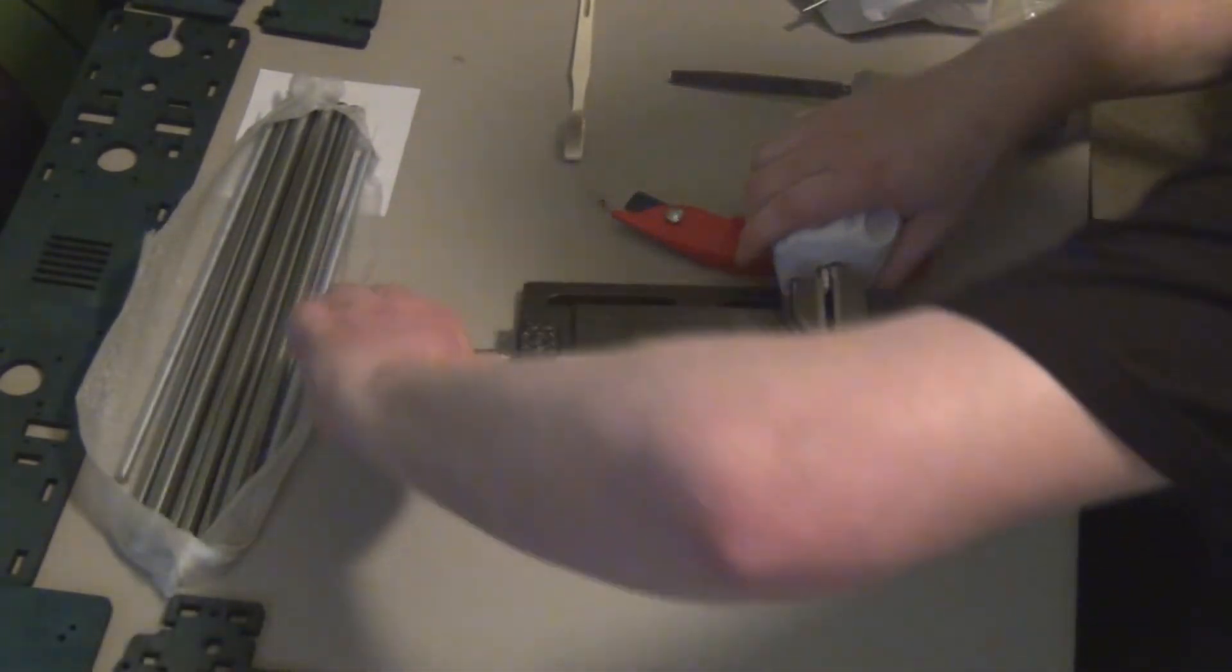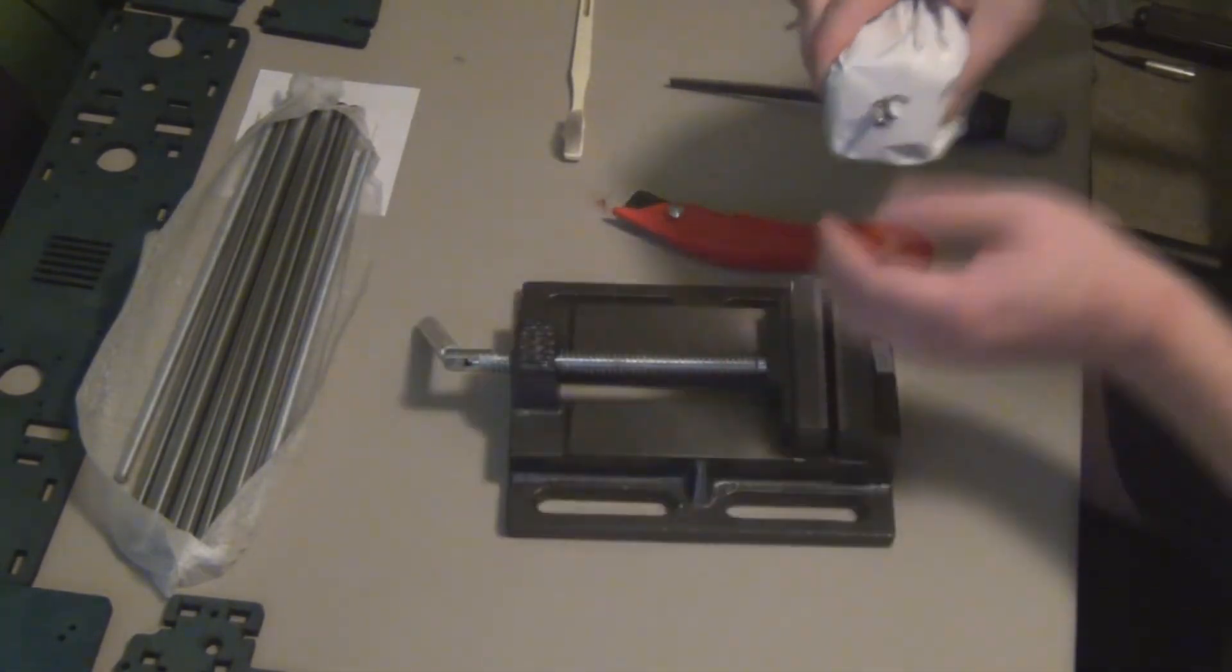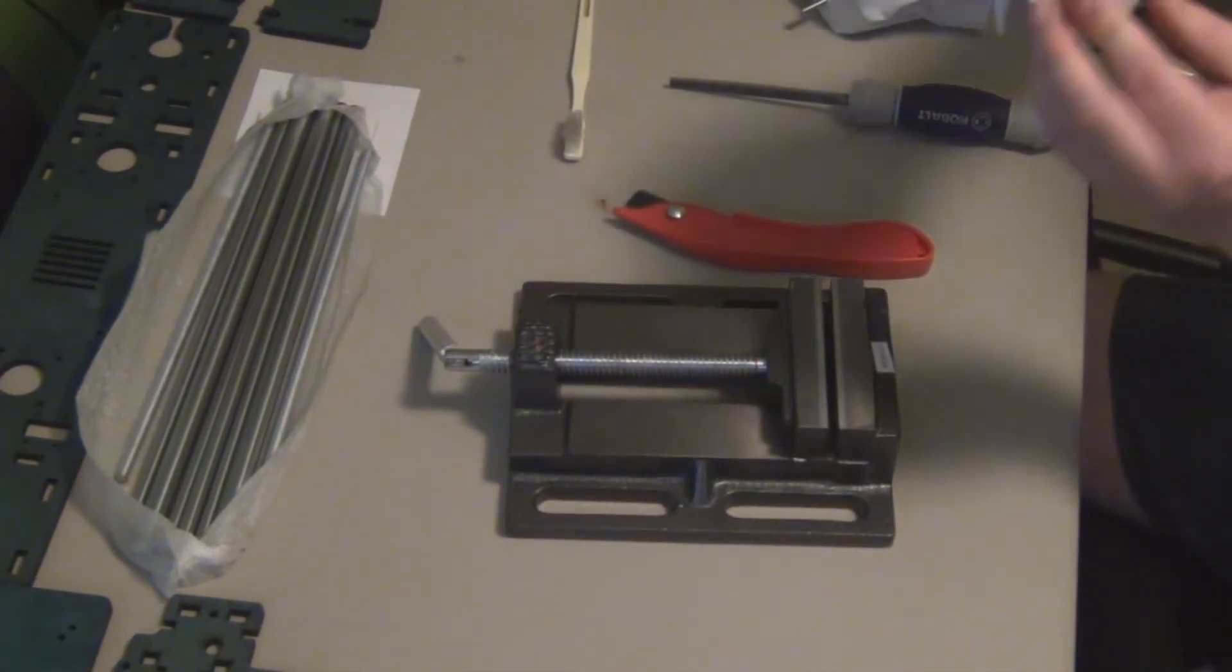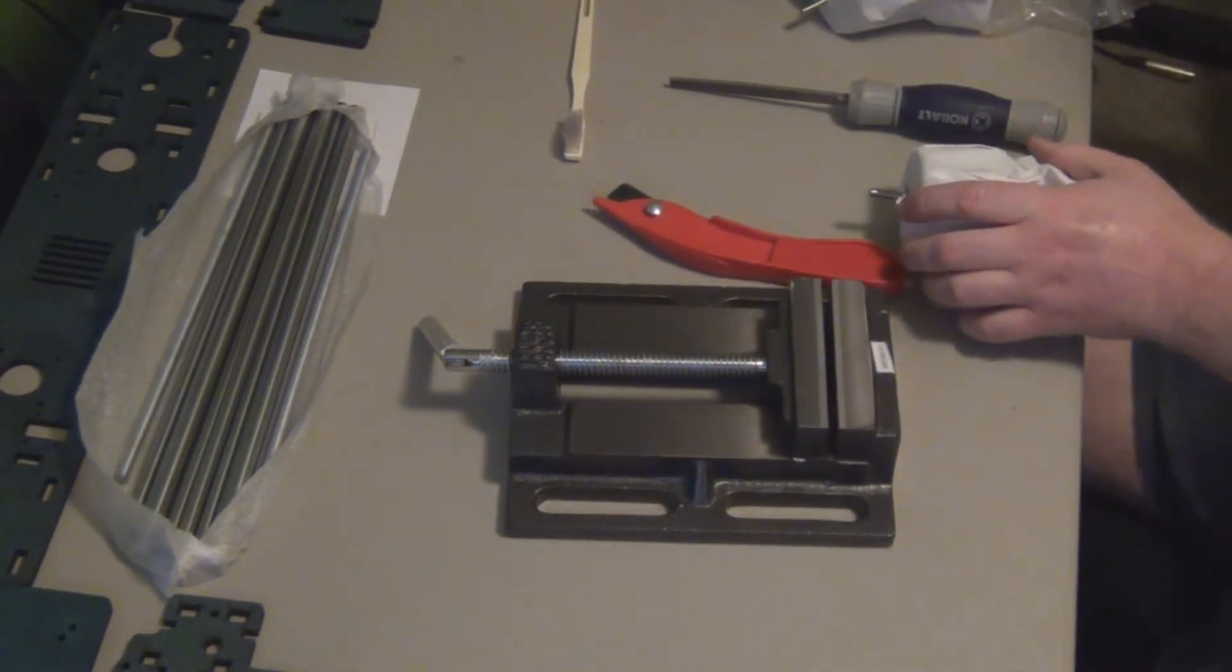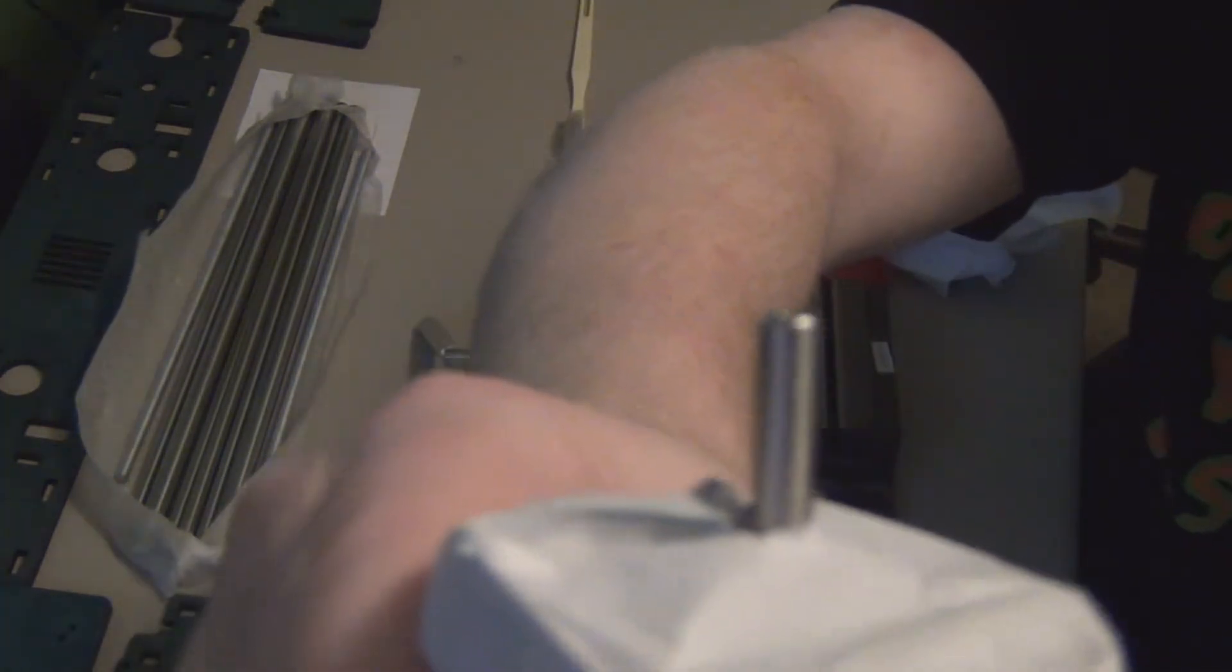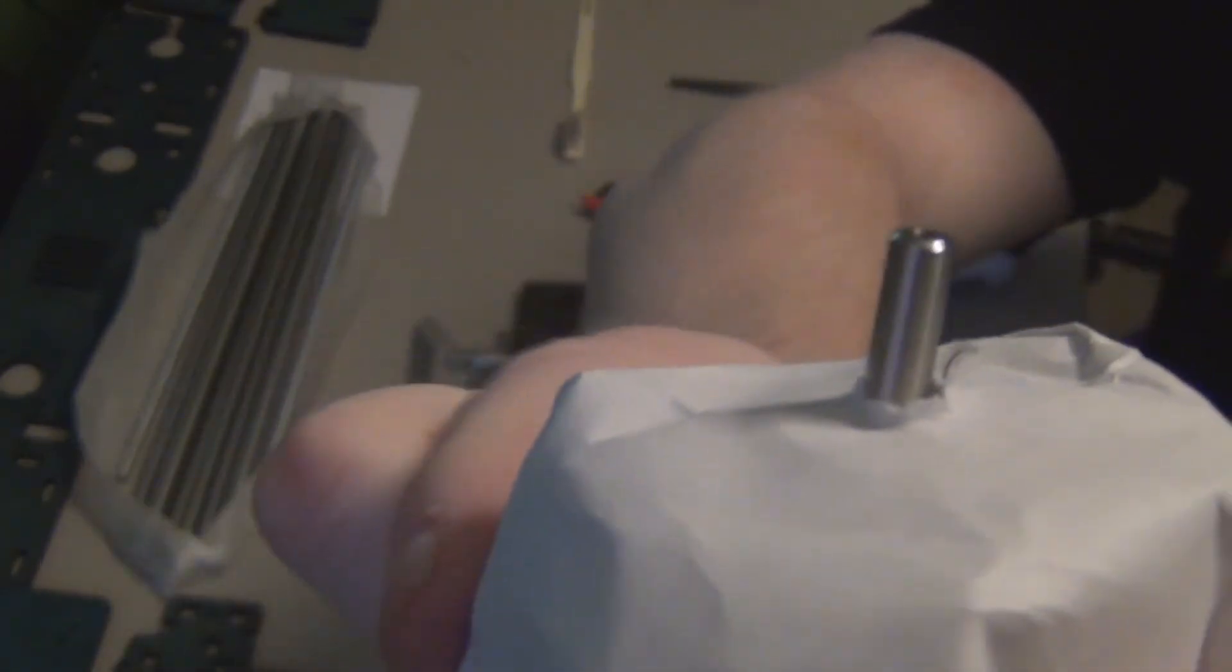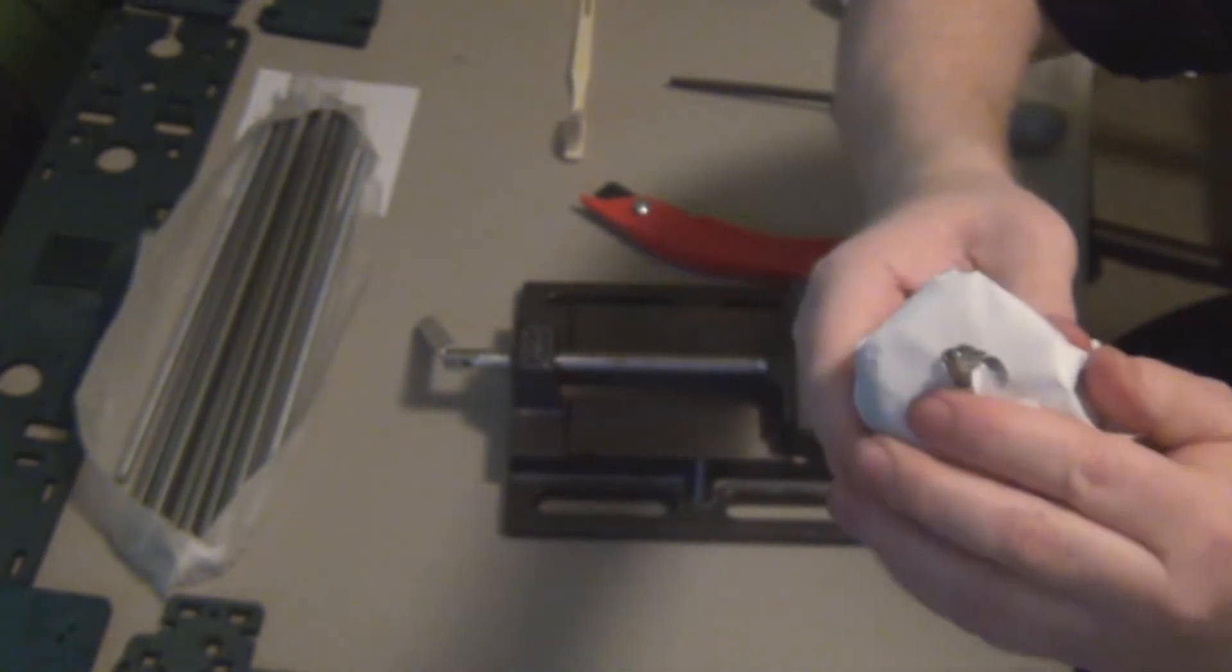Alright, so we will pull that out of the clamp and see what we have here. So I am not sure if you can actually see the difference. So this is one that has not been flattened yet, just perfectly cylindrical. This is the one that we have just added the flat to.